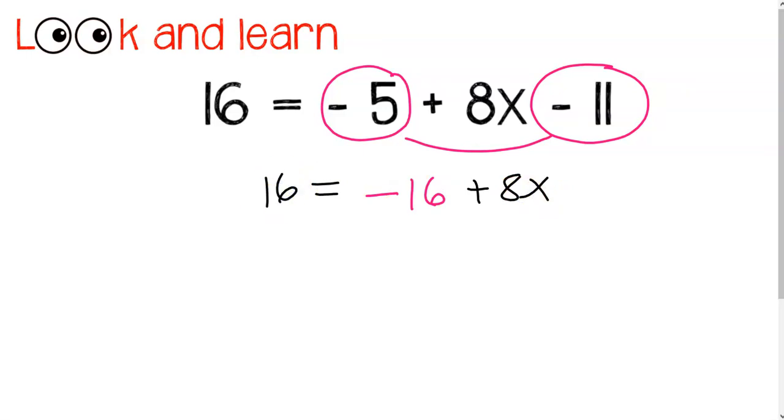The rest of the problem remains the same. Now you're going to use your inverse operations to isolate that variable. So I'm going to add 16 to both sides and divide by my coefficient.